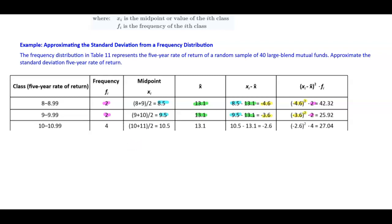For the next class, 10 to 10.99, the frequency is 4, the midpoint is 10.5, and the sample mean is 13.1. Taking 10.5 minus 13.1 gives negative 2.6. Negative 2.6 squared times the frequency of 4 gives 27.04.